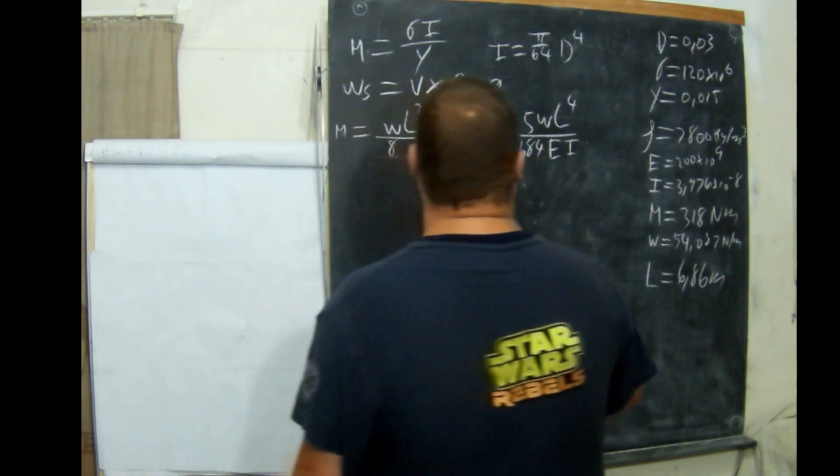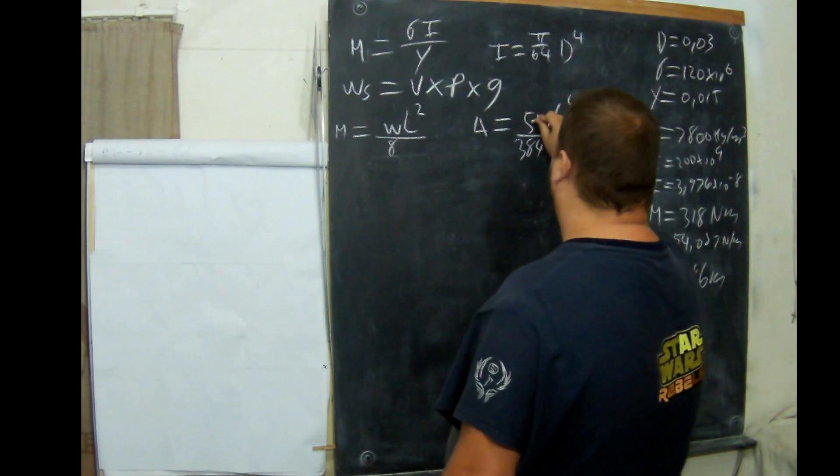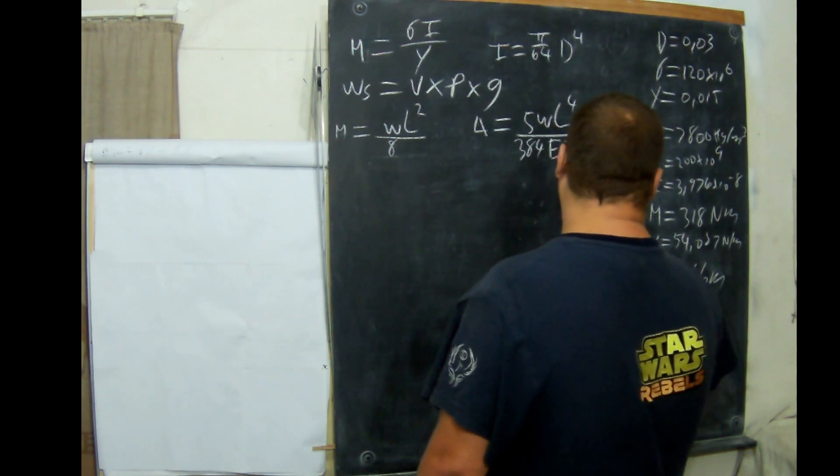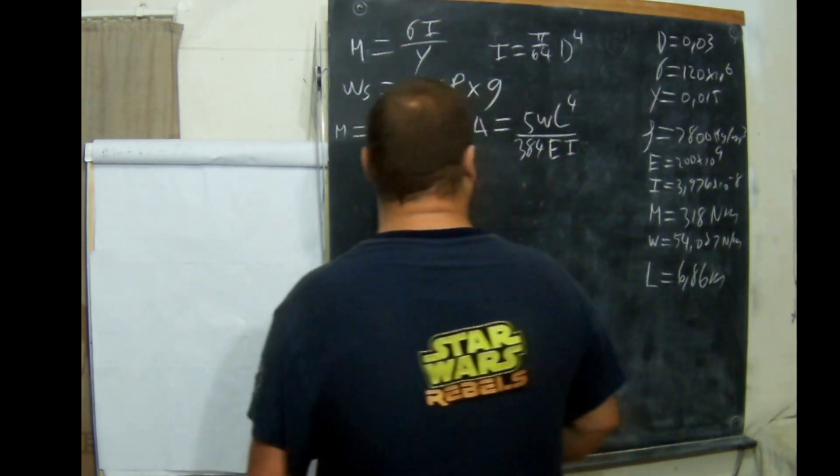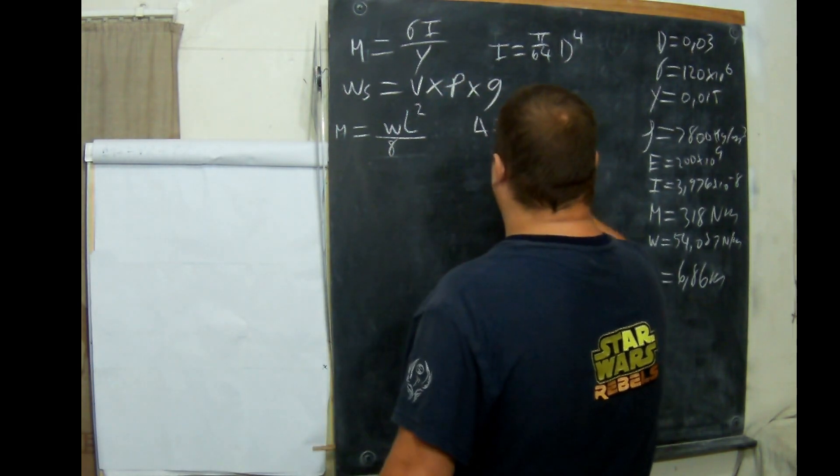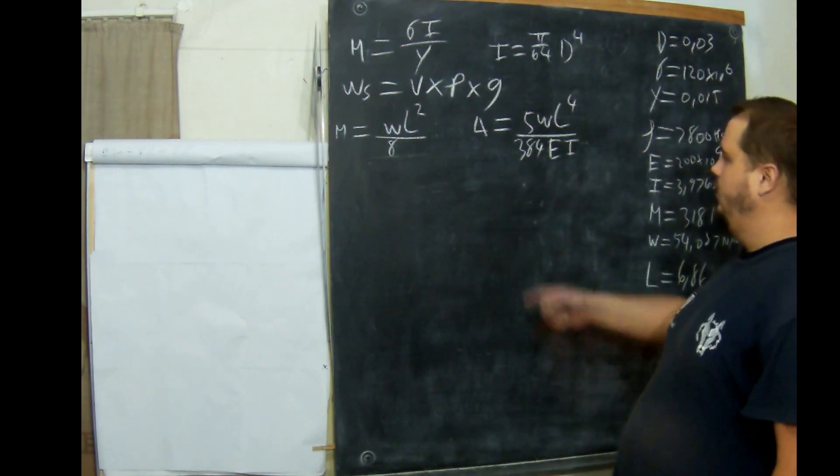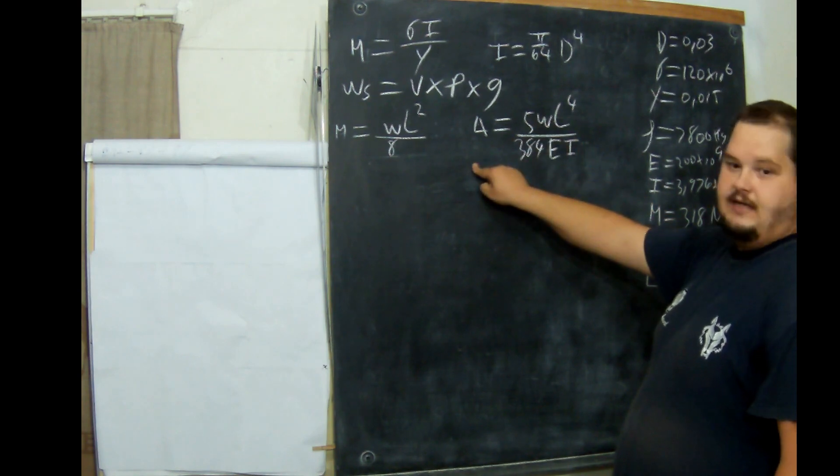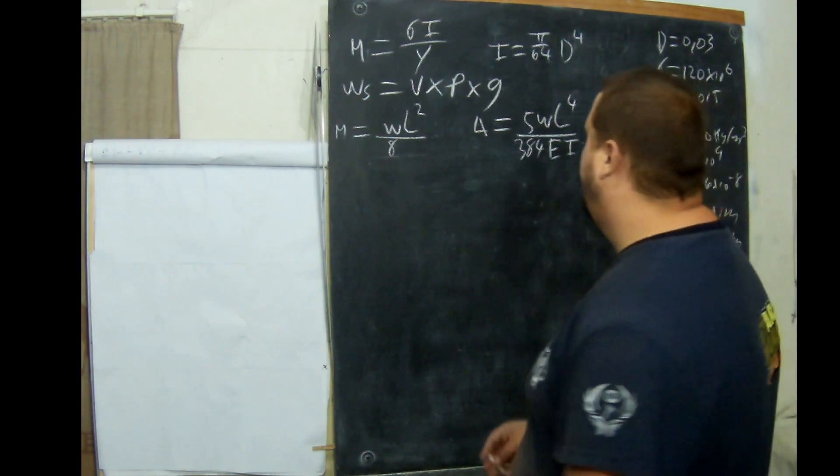How that works is deflection equals 5W L to the fourth over 384 E I. Now we have everything here barring L. We have our deflection, we have W, we have E, we have I. I had to save I from previous calculations. Now let's formula manipulate. We're going to take all this down here and move it up. We're going to take 5W and move it down and we'll be left with L to the fourth.